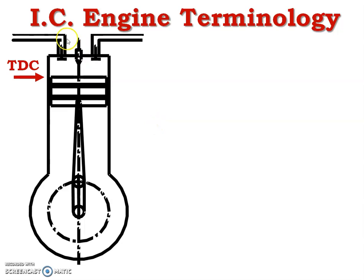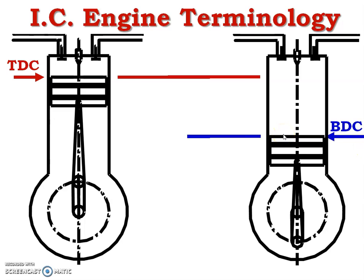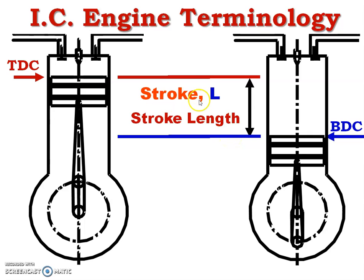In a vertical engine, the topmost position of piston is the top dead center, and the bottommost position of piston is the bottom dead center. The distance between the top dead center and the bottom dead center is known as the stroke or stroke length, denoted by the symbol capital L.